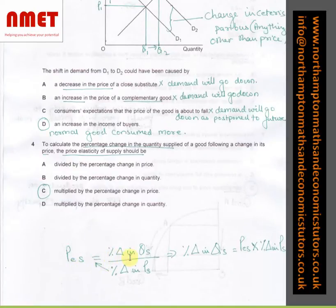PES equals percentage change in QS over percentage change in PS. To find percentage change in QS, all we need to do is PES times percentage change in price. Which is answer C.